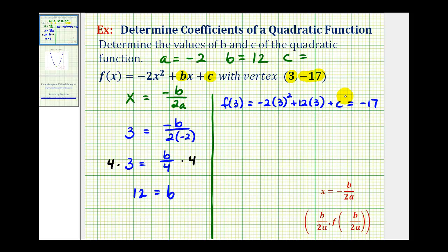And now we'll solve this for c. So three squared is nine times negative two, that's negative eighteen, plus twelve times three is thirty-six, plus c equals negative seventeen. Combining like terms, this would be eighteen plus c equals negative seventeen. And finally subtracting eighteen on both sides, we have c equals negative thirty-five.